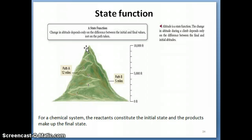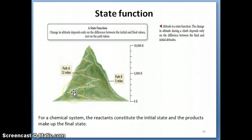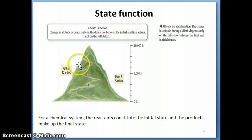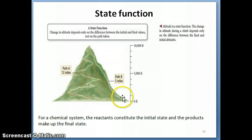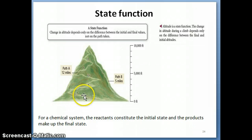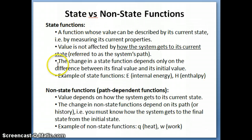So as you can see in this example, there are certain properties, like altitude, that are not affected by the path that a person takes. And there are other properties whose value is affected by the path that a person takes. We can then take this back to thermodynamics. It turns out that there are thermodynamic properties whose value doesn't depend on the path that the system takes to get from the initial to the final state, and there are also properties whose values will depend on that path. This is where the term state function and non-state function comes in.